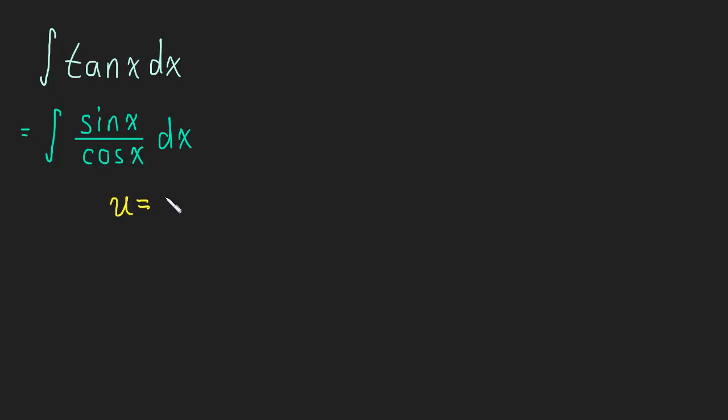Let u equal cos x dx—cosine of x. Oh, not dx, sorry. Just cosine of x. Then du is going to be negative sin x dx.